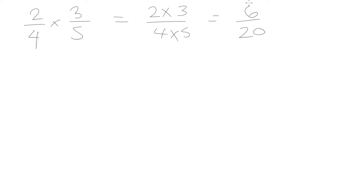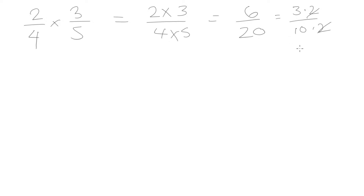When we have something like this that contains a common factor in both the numerator and the denominator, we can cancel out those common factors and simplify this further. 6 over 20 can be expressed as 3 times 2 over 10 times 2. And now we have 2 on both the top and the bottom, which can cancel out, and we're going to be left with 3 tenths. That is our most simplified form of this product.